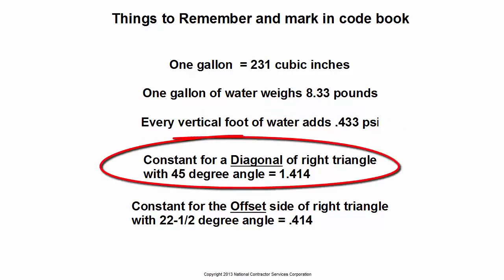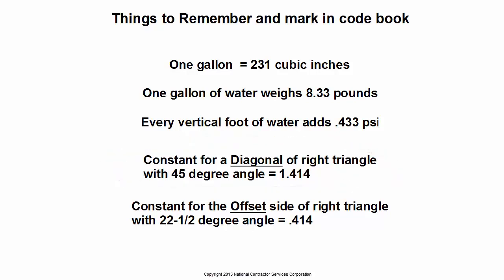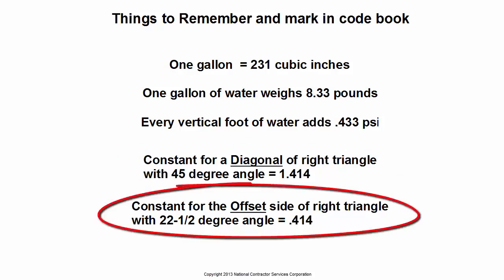The constant for a diagonal of a right triangle with a 45 degree angle is 1.414 times the length of one side. And the constant for the offset of a right triangle with a 22.5 degree angle is 0.414 times the measurement of the run.